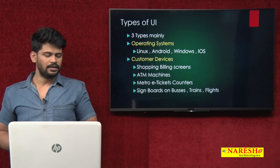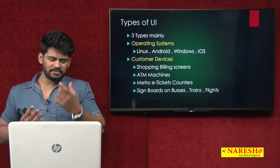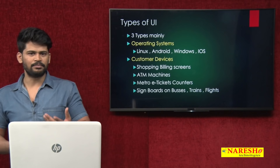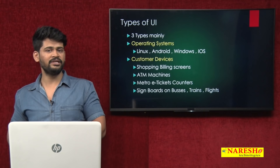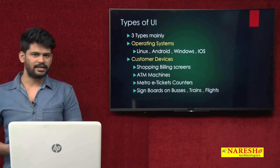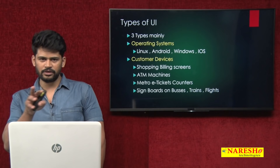And if you go to an ATM machine — the ATM machine is the best example. You don't need to go physically to any bank to get money. Go to ATM, insert the card, it asks some information, give the information, and you get the cash. You are a human being and that is a machine — the interaction happens with the concept of UI. Even metro e-ticket counters: if you want to get a ticket, you don't need to go physically — you can do it by yourself. That is the concept of UI — customer devices.